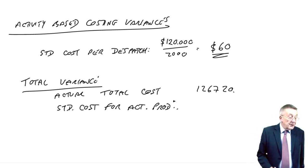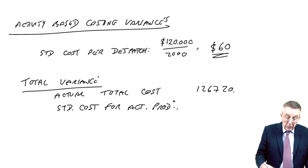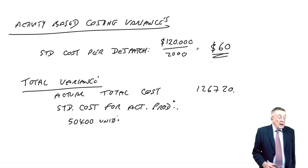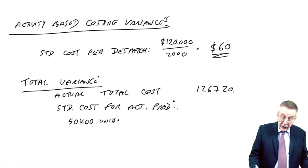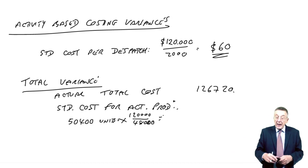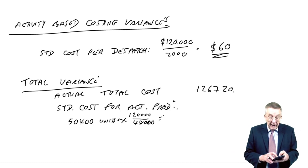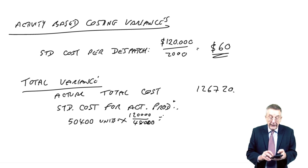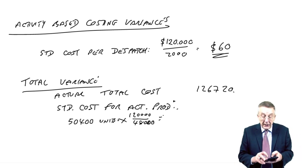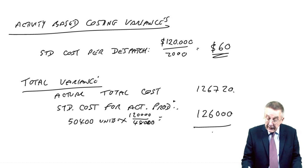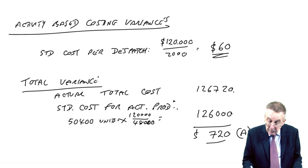What's the total variance? We'll do it in exactly the normal way. We'll take the actual total cost, which is £126,720, and we'll compare it with the standard cost for the actual production. The actual production was 50,400 units. Dispatching was £120,000 in total for 48,000 units. So, the standard cost per unit, £120,000 divided by 48,000, comes to £2.50 a unit, times 50,400 units is £126,000. Therefore, the total variance is £720 adverse. We've spent more than we would have expected.